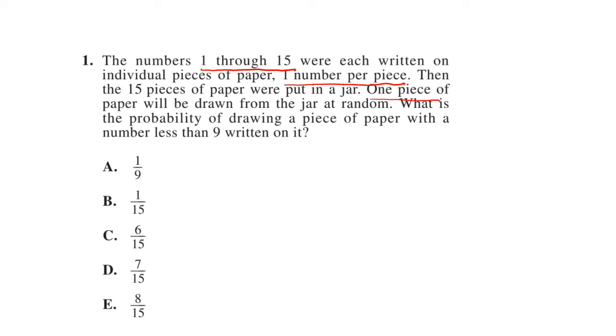One piece will be drawn from the jar at random. What is the probability of drawing a piece of paper with a number less than 9 on it? So we're doing probability. Probability is what you want over what you have. So what we have are 15 numbers, so 15.